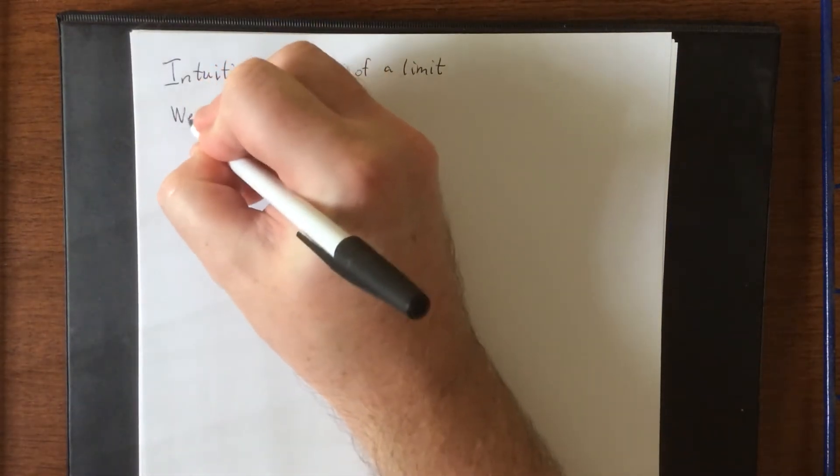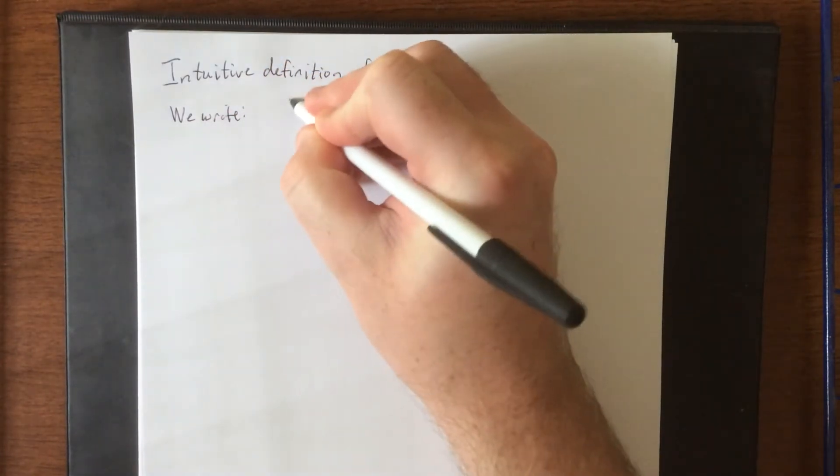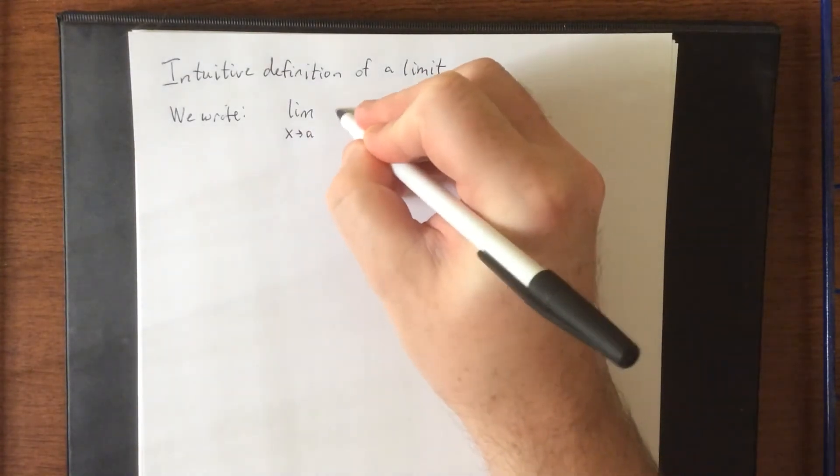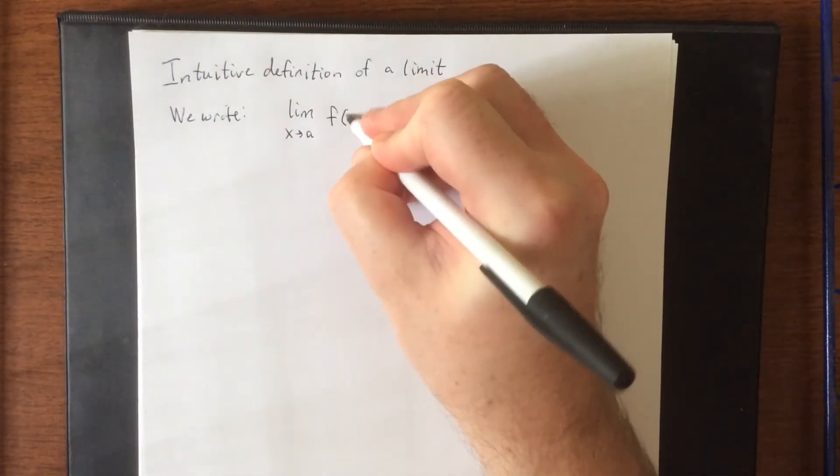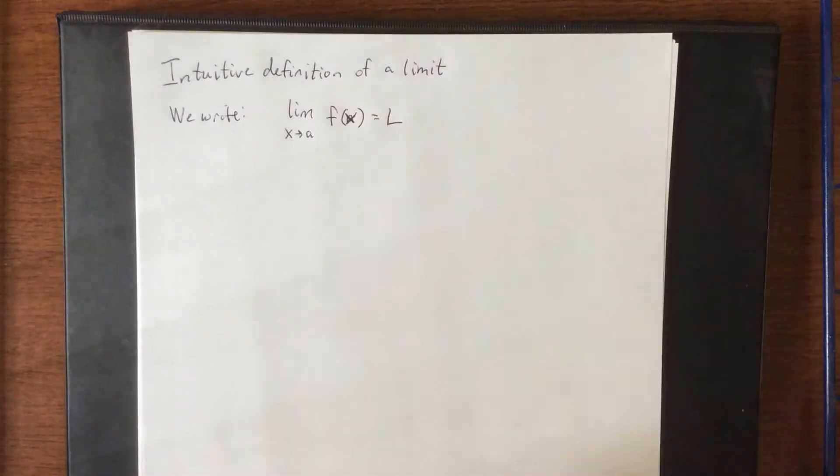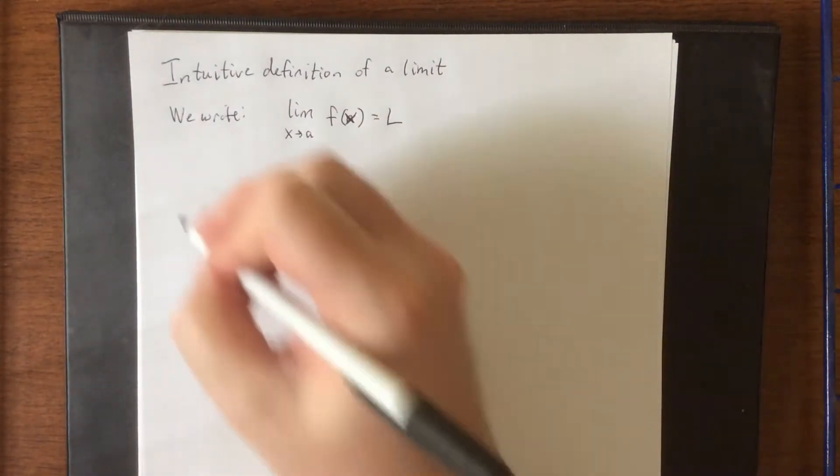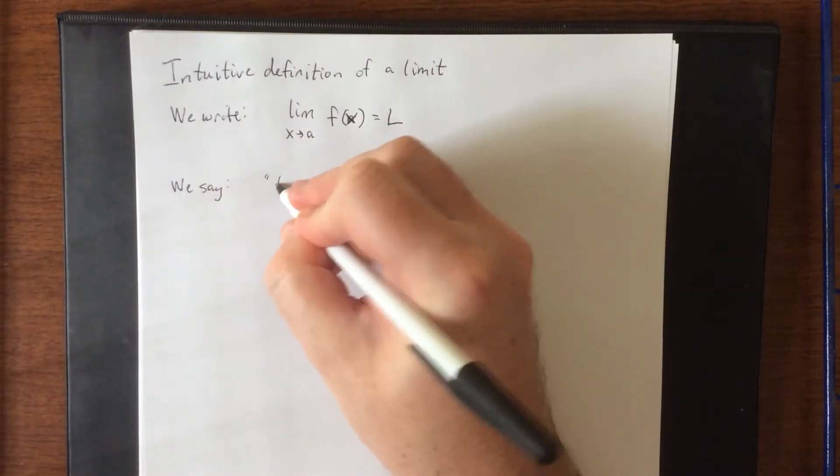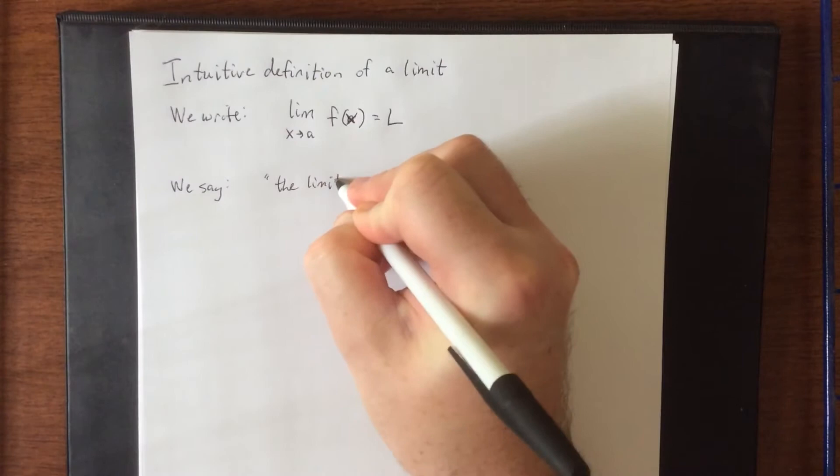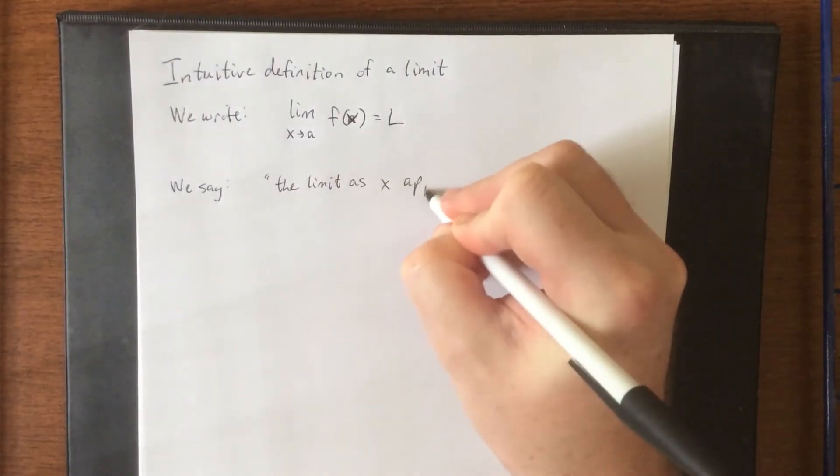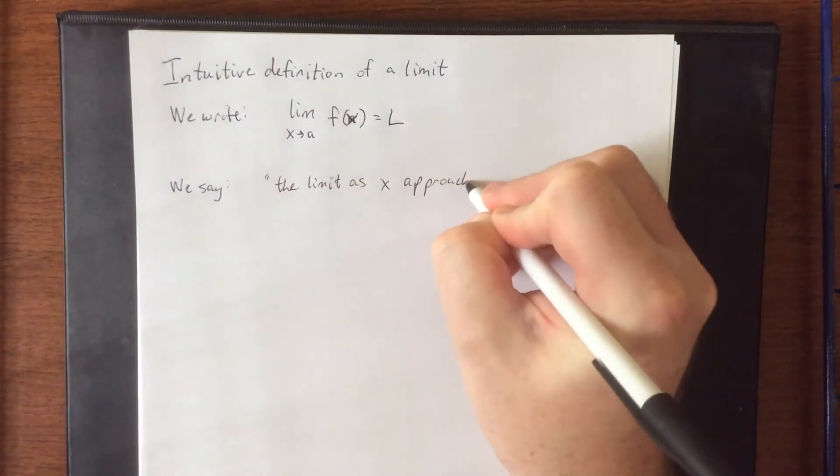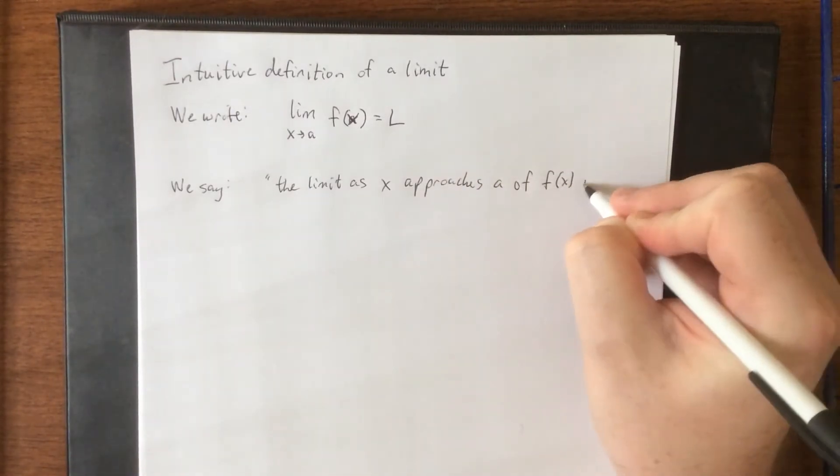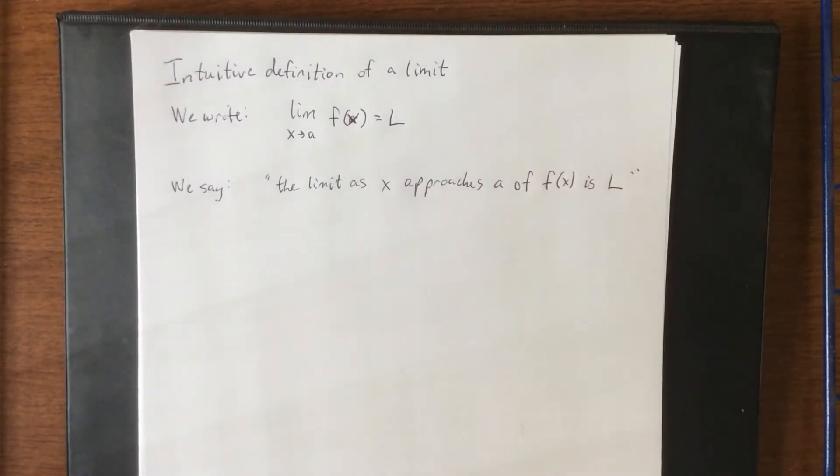So what we write is the following: LIM below it, X arrow A, F of X is equal to capital L. We say the limit as X approaches A of F of X is equal to L, or is L.